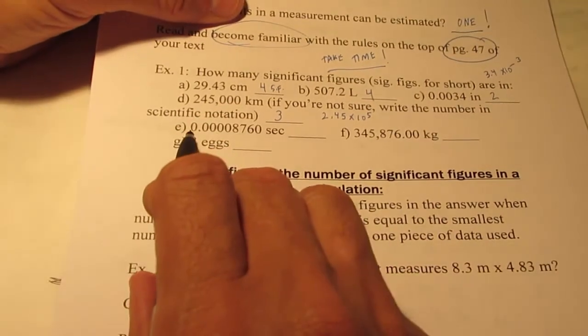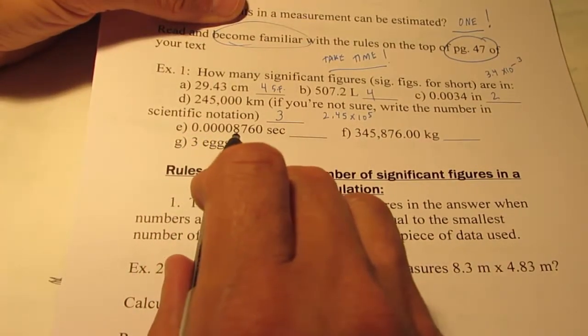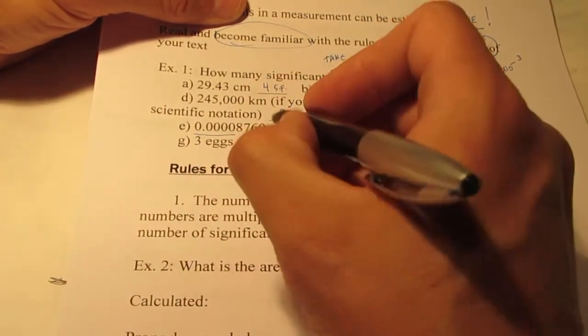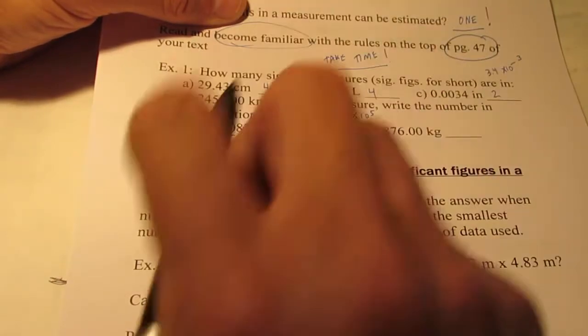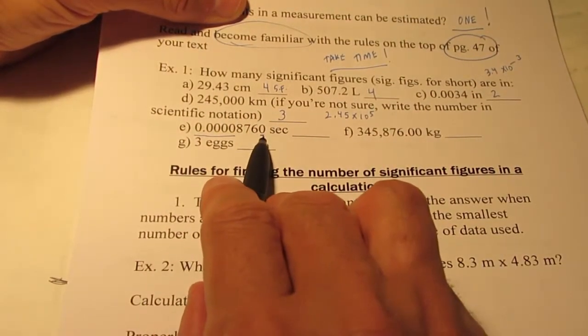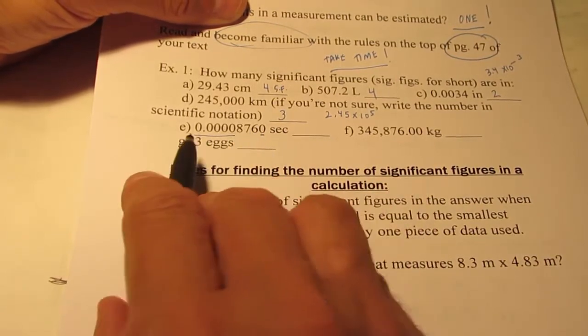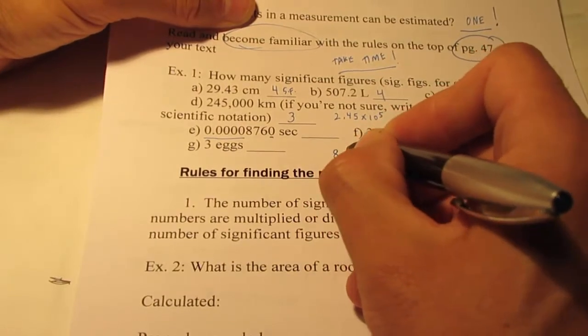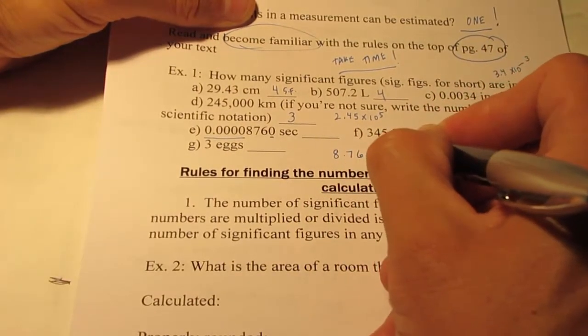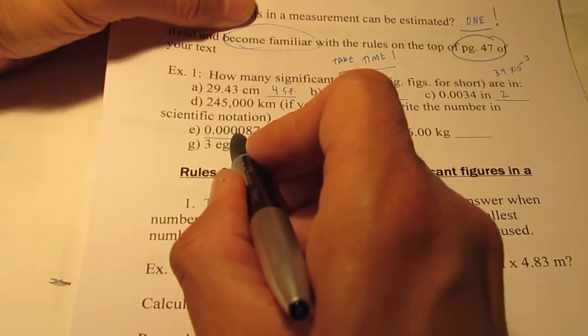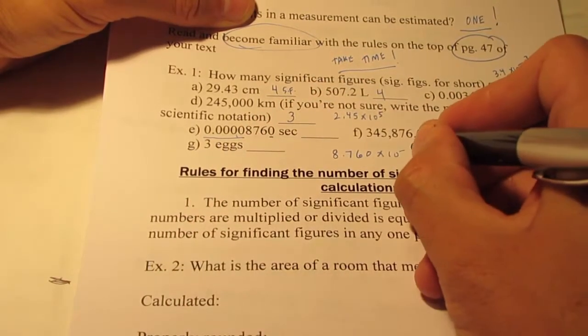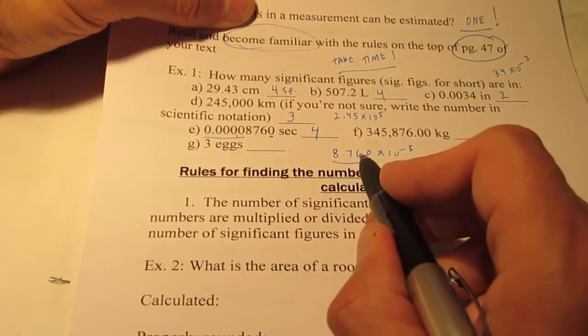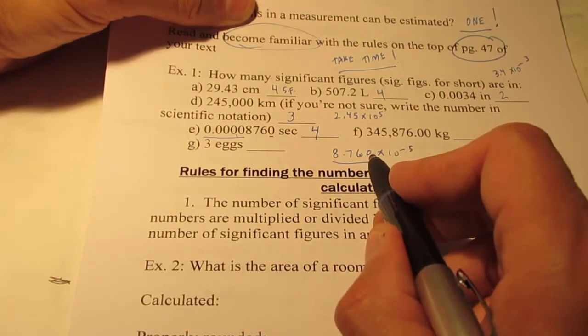Letter E, 0.00008760. Well, hopefully you understand that those are not significant. But that zero at the end of a number to the right of the decimal is significant. If I were to rewrite this in scientific form, I would have 8.760 times ten to the negative five. So I would have four significant figures there. One, two, three, and four. That zero is significant.